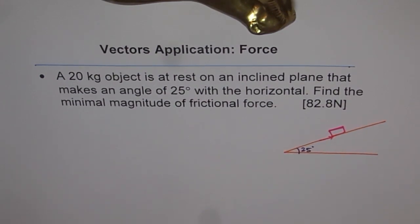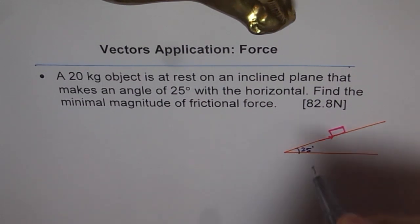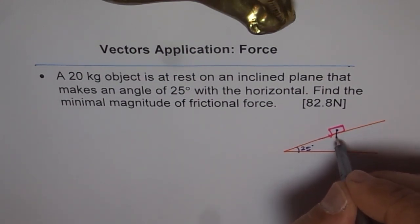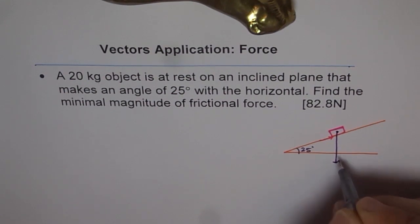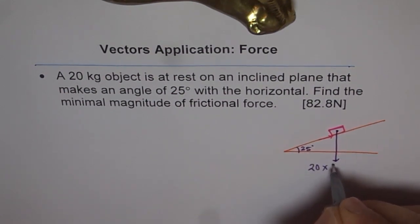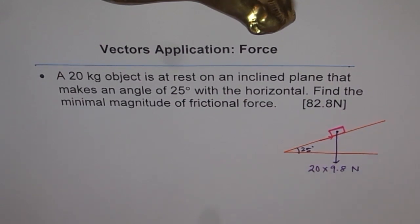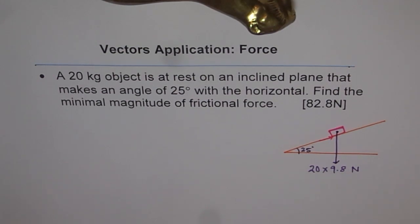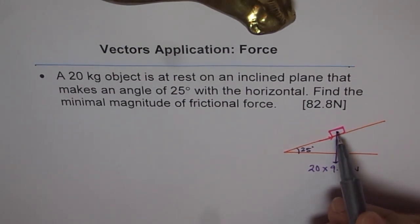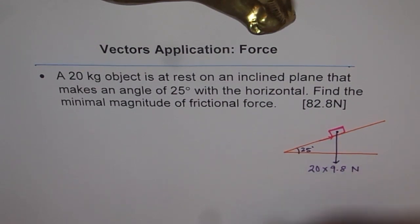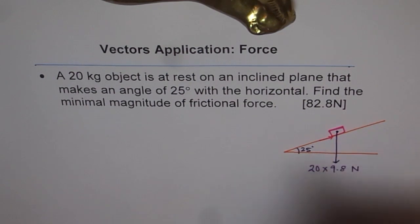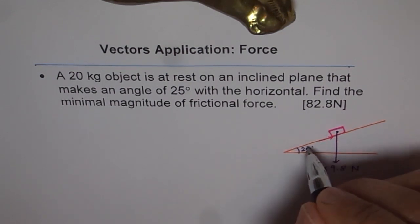The object has a mass of 20 kilograms. This mass exerts a downward force of 20 times 9.8 newtons. Because of this downward force the body should move, but it is not moving, since there is an equivalent opposite force keeping the system in equilibrium. Let's work out how much that force is.